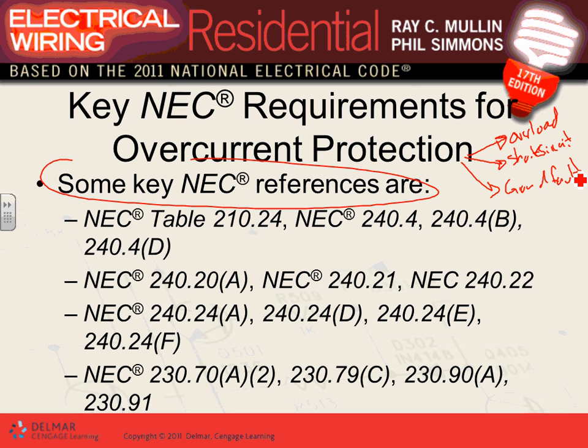Short circuit: if you have phase-to-phase and you make them touch each other, intentionally or accidentally, you get a short circuit. You eliminate the impedance of the load, the current becomes extremely high — tens of times the rated current — creating a short circuit condition, and the circuit breaker will see it and trip.